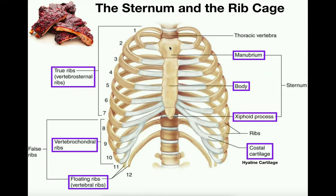What the sternum does, along with the ribs, is to protect the underlying organs. In this area you're going to have the heart, and the lungs are going to flank the heart on either side. The ribs play more of a role in protecting the lungs, while the sternum is mostly for protection of the heart. That's pretty much all there is to the sternum.